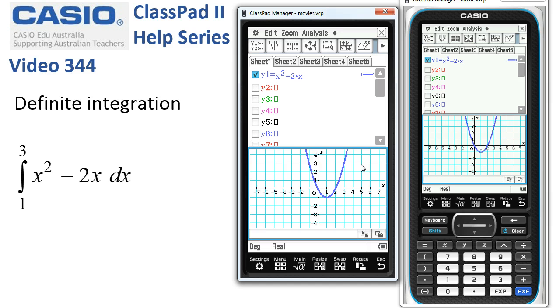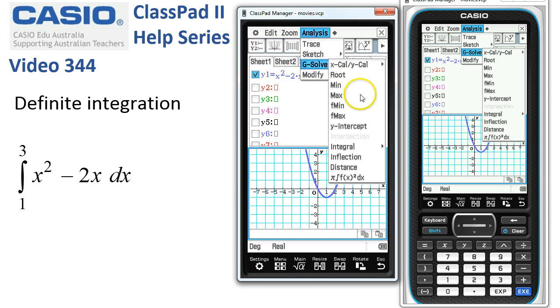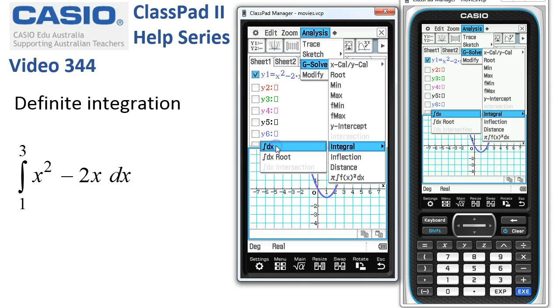Now, to work out the integral, the definite integral from 1 to 3 of this function, we tap analysis, g solve, integral, and then choose the top option here, integral dx.